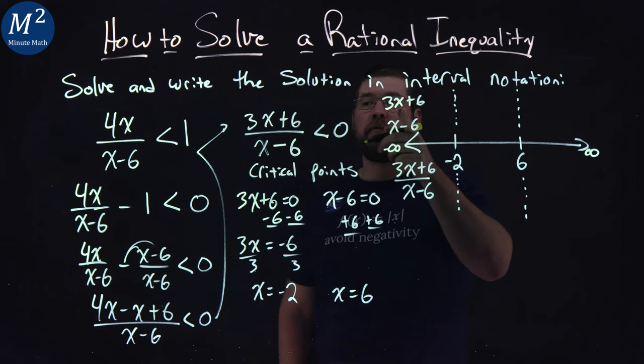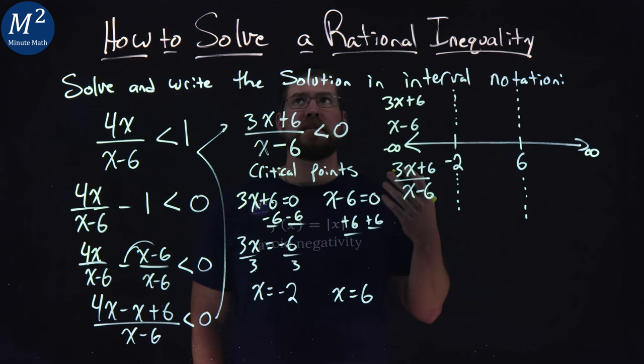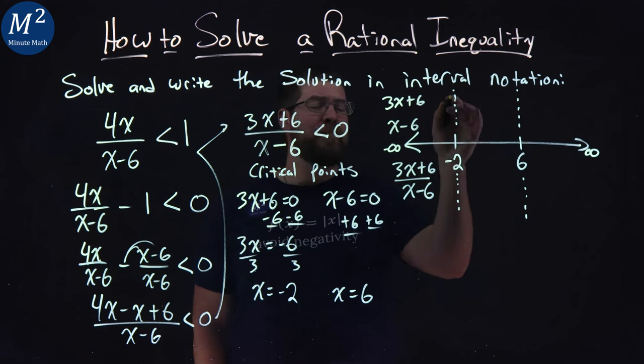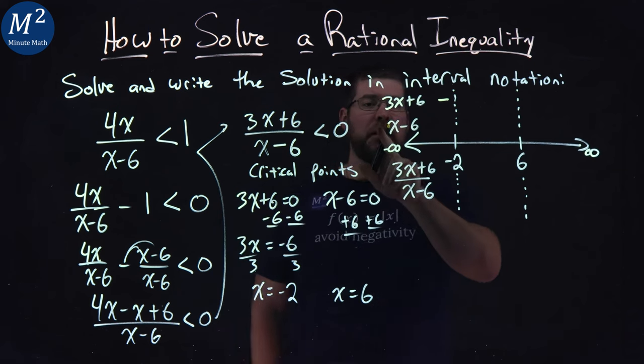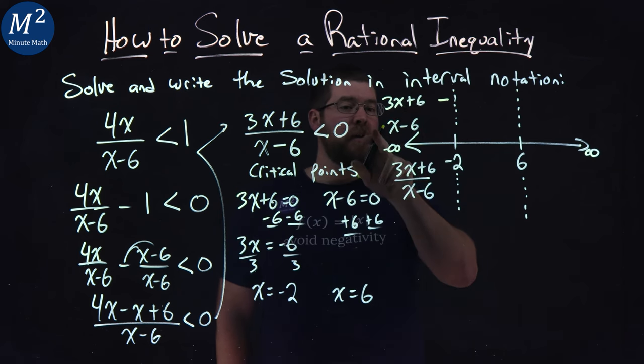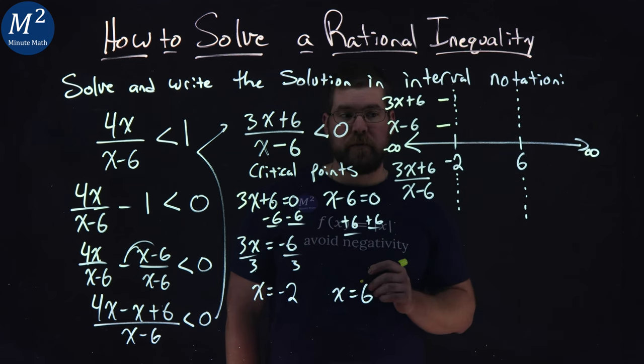Negative 10 plugged into the numerator: 3 times negative 10 is negative 30, plus 6 is negative 24. I don't really care what the value is, I just care that it's negative. If we put negative 10 in for x here, negative 10 minus 6 is negative 16. It's negative.